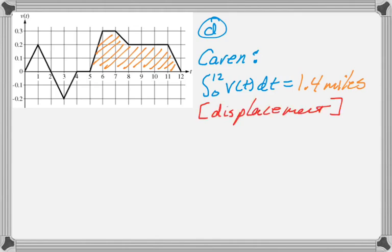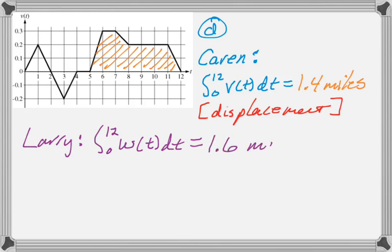And that ends up giving us 1.4 miles. And that's the displacement that she has. So that's how far she is from home, which is just displacement. And Larry is, they give us a function. And this is a calculator question. So I just punched that into my calculator and got 1.6 miles. That's actually the exact answer.